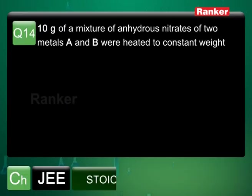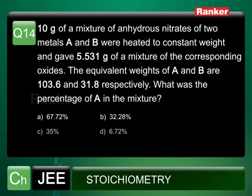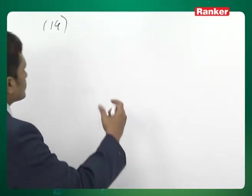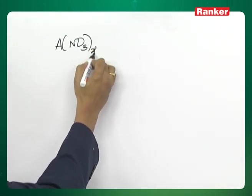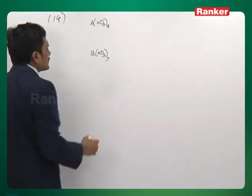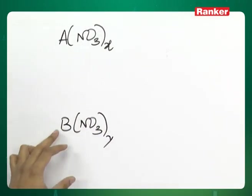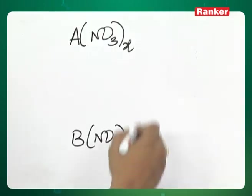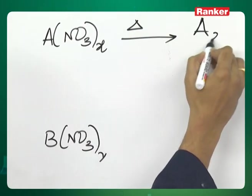Next: 10 gram of a mixture of anhydrous nitrates of two metals A and B are heated to constant weight, giving 5.531 gram of a mixture of corresponding oxides. Equivalent weights of A and B are 103.6 and 31.8 respectively. Find the weight percentage of A. The nitrate A(NO₃)ₓ and B(NO₃)ᵧ on heating give their oxides. Assuming valency of A is x and B is y, the compounds are A(NO₃)ₓ and B(NO₃)ᵧ.